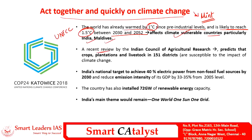A recent review by the ICAR — Indian Council of Agricultural Research — predicts that crops, plantations, and livestock in 151 districts will be majorly affected either by drought or flooding, posing a question mark on national food security. To counter this climate change, many developed nations have created their nationally determined contributions, wherein countries set targets for sustainable development and sustainable utilization of resources to curb the impacts of climate change.